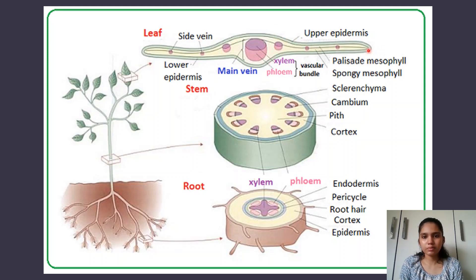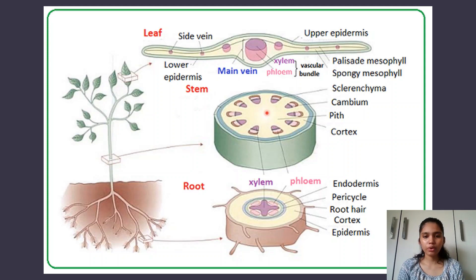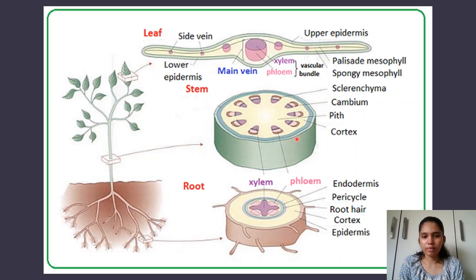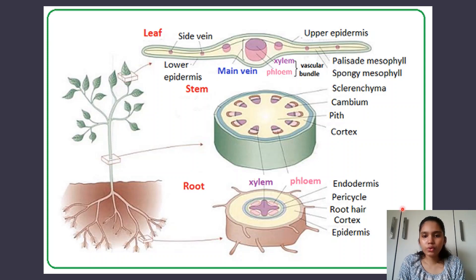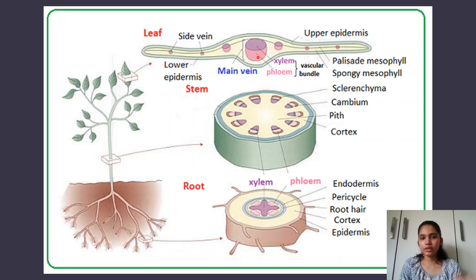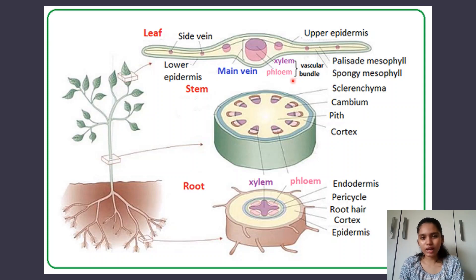We've already looked at the structure of the leaf — the upper epidermis, palisade layer, mesophyll layer, and lower epidermis. In the stem, on the inside you have the pith, which is also used for support. Then you have the root cortex and the epidermis, which is the outer portion. For the root: the root cortex, the endodermis, and the epidermis. Print out a worksheet and label it, or draw it yourself at least four times — these can come as four-mark labeling answers.